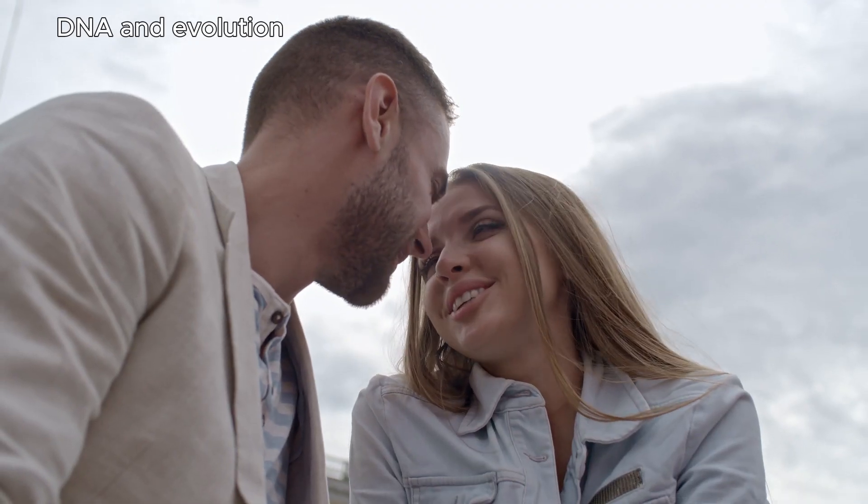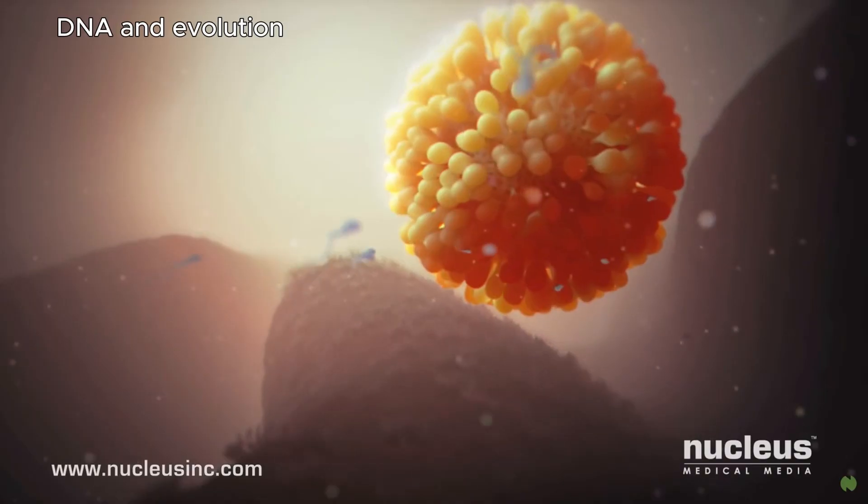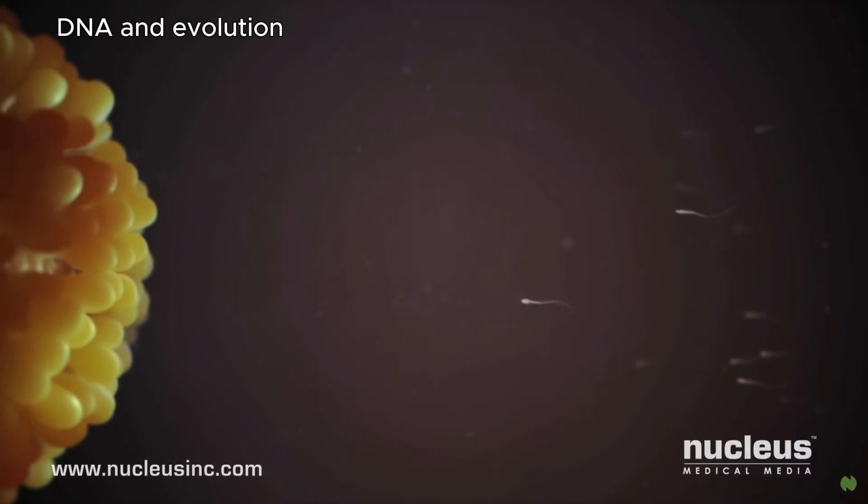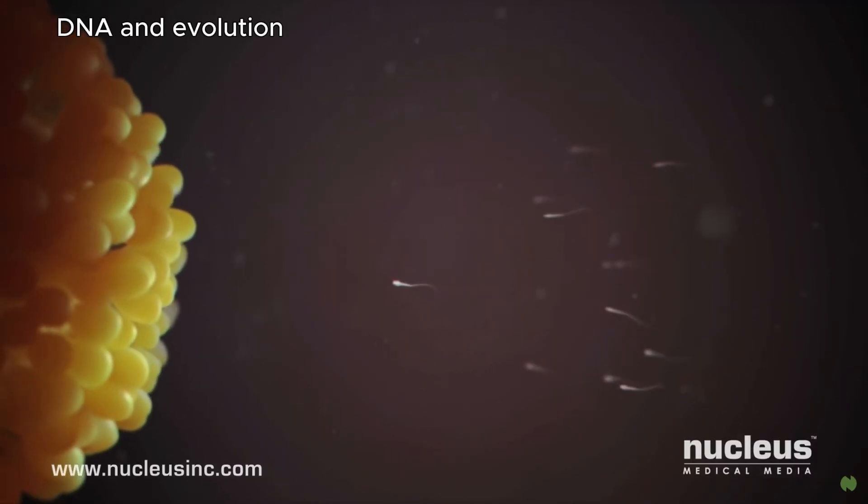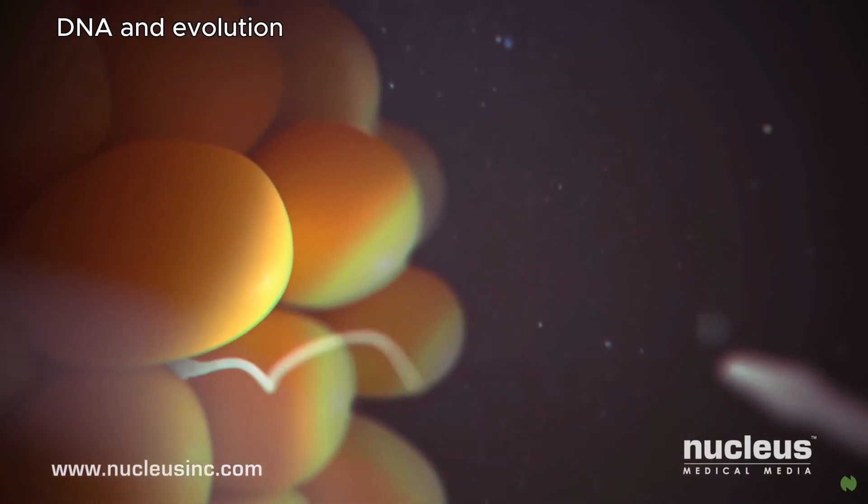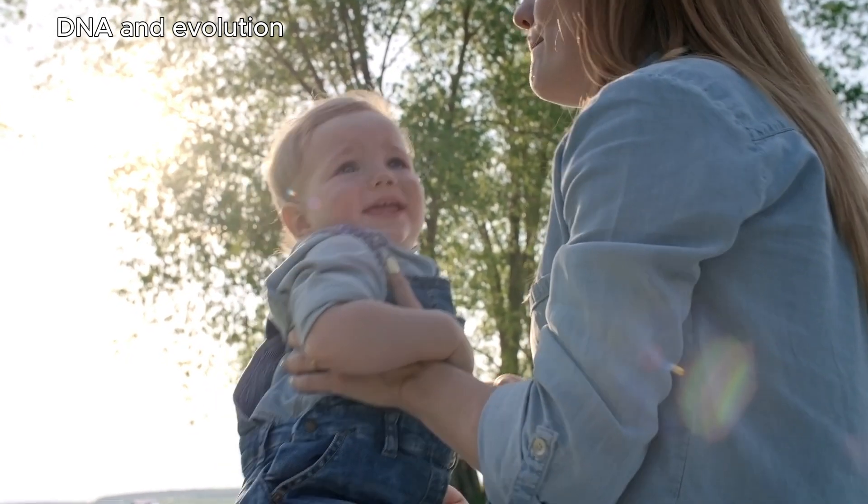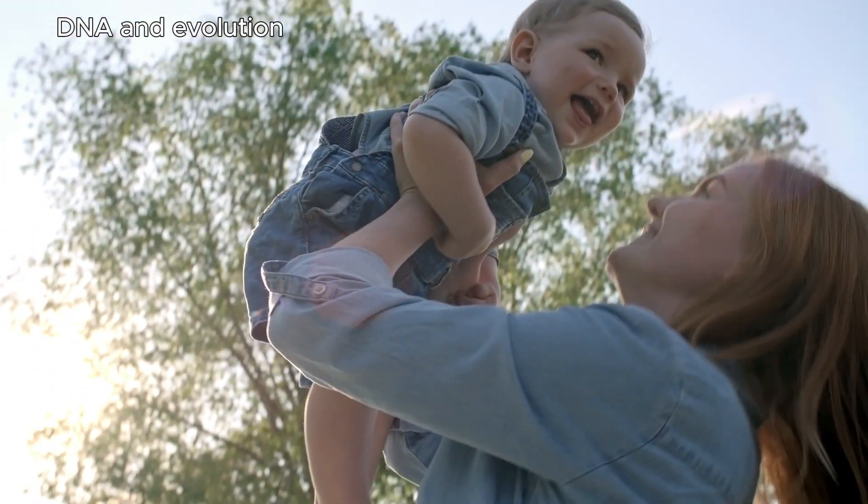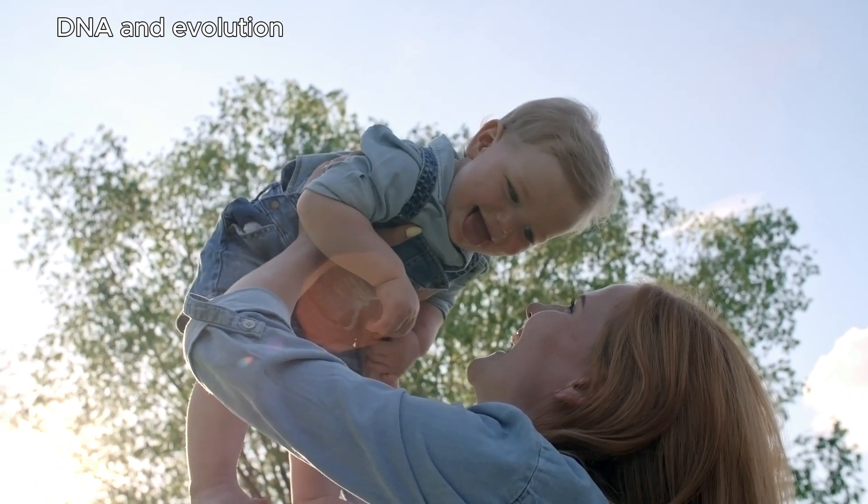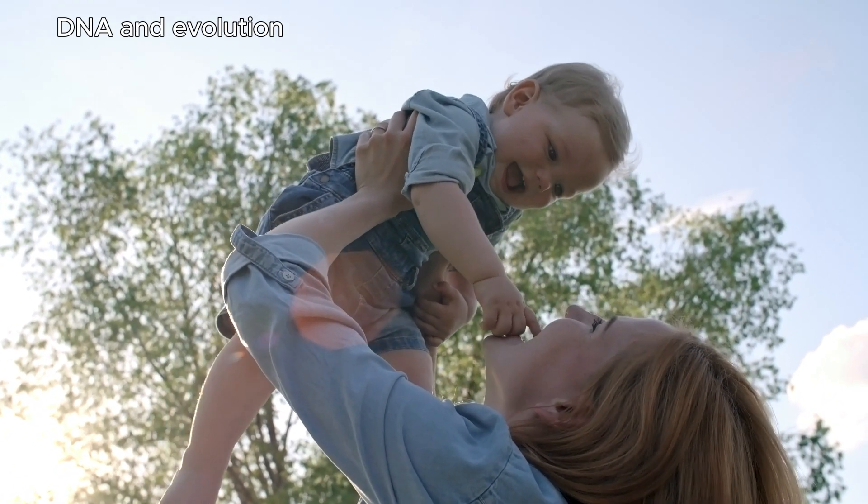So when you're ready to have offspring, if one of your sperm, if you're a male, or egg cells, if you're female, contains this mutated part of your DNA, well, when they fuse together with your partner's sperm or egg cell, the offspring will inherit this slightly different DNA from the parents.